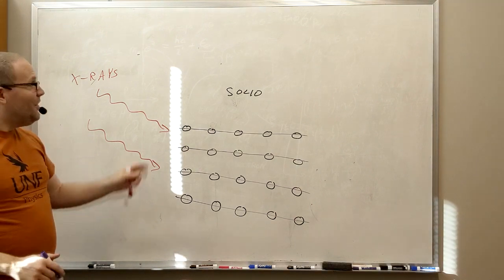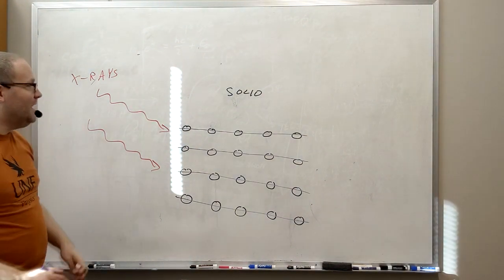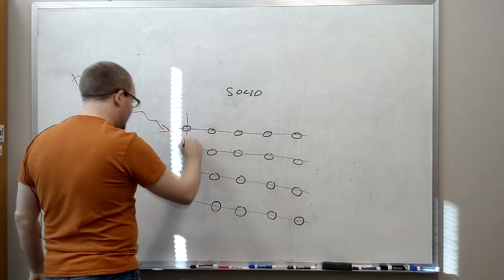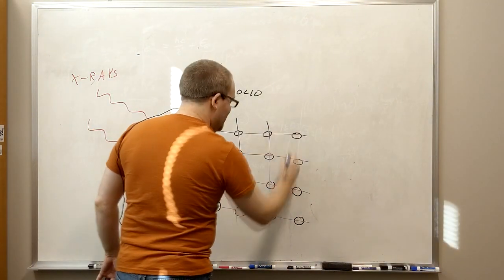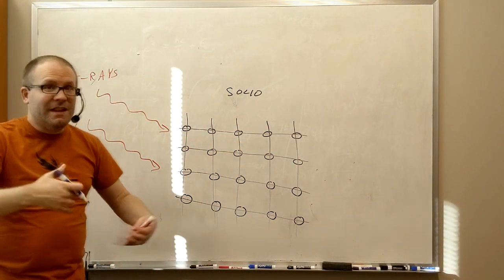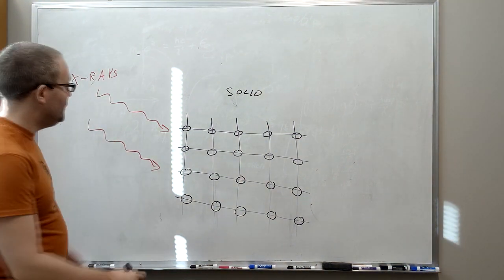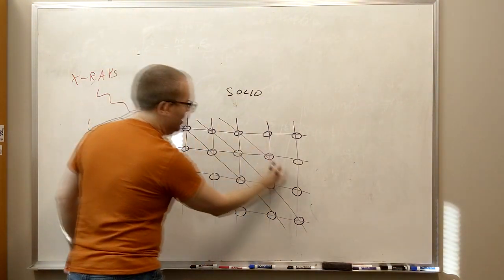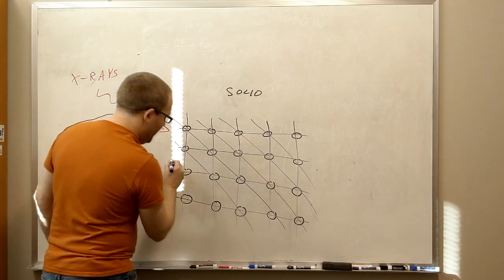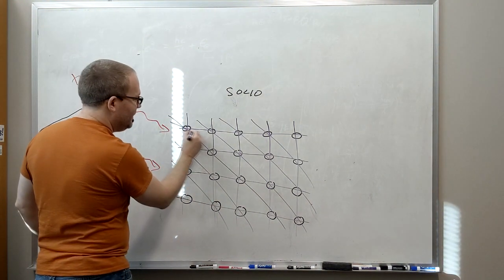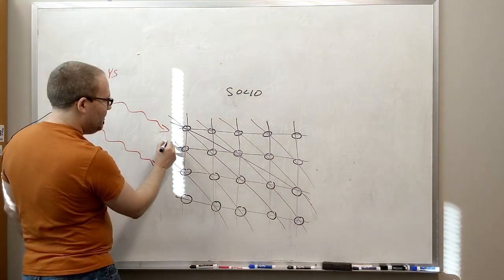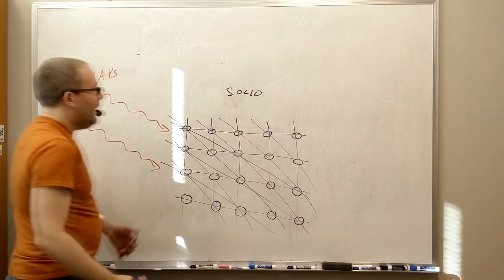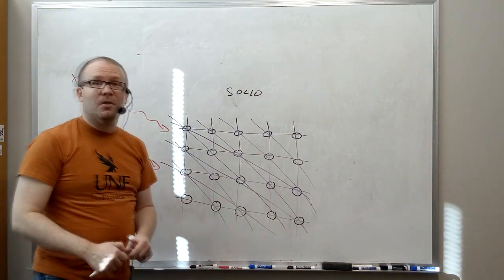Here's the catch: there's actually an infinite number of these planes that are possible. Here I drew the planes going this way, but I could also draw the planes going this way. The planes aren't actually there — it's a calculational convenience that we introduce. I could also draw them at an angle, going at a slope of one half. Any kind of pattern where I connect the dots, I can keep repeating, and I'll get those planes coming out. You can draw them an infinite number of ways.